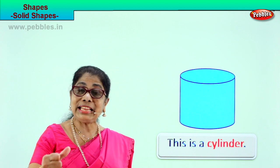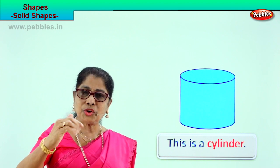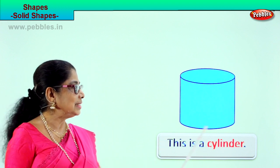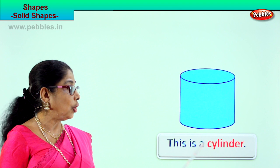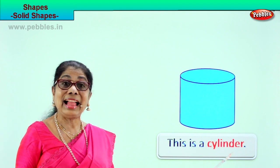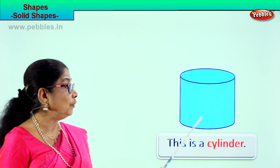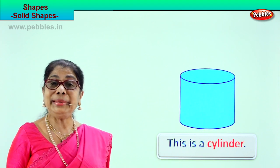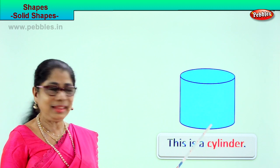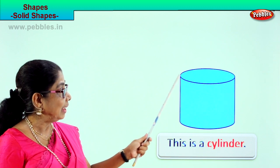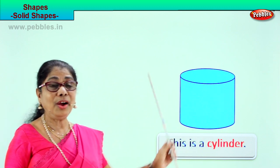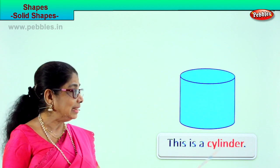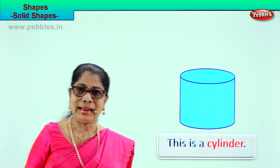Have you seen silver mugs, large coffee mugs? Those are cylindrical. This shape is called a cylinder. Look out for cylindrical shapes in your mummy's kitchen. Two sides are flat and here you have a round edge, just like a tin. This is a cylinder.